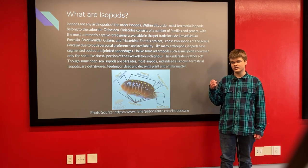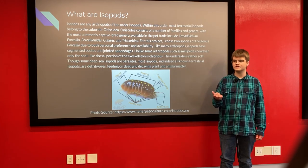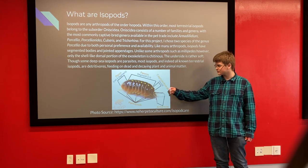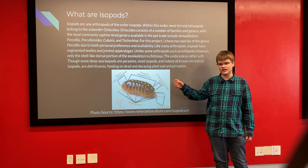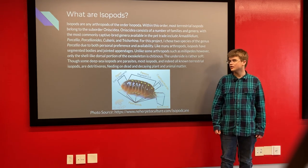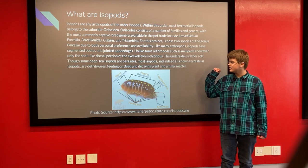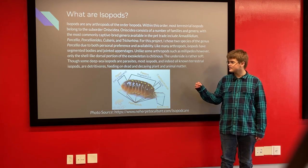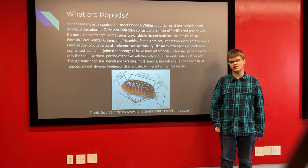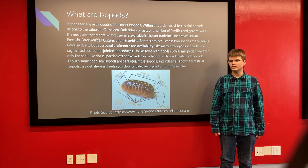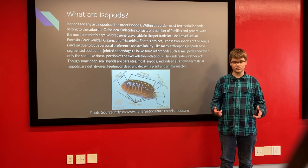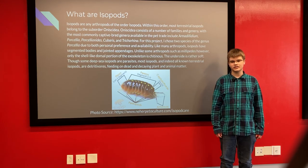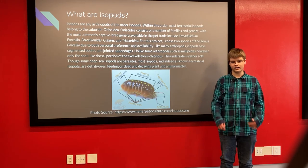As arthropods, isopods have jointed appendages and segmented bodies, although the chitinous exoskeleton is really only in the shell-like formation on the back. Their undersides are actually rather soft. As far as their diet — and this is very important for this experiment — some are parasites, but those live exclusively in the deep sea. The only ones we know of on land, and most aquatic isopods as well, are detritivores, feeding on dead and decaying plant and animal matter, which is particularly important for why they are helpful here.